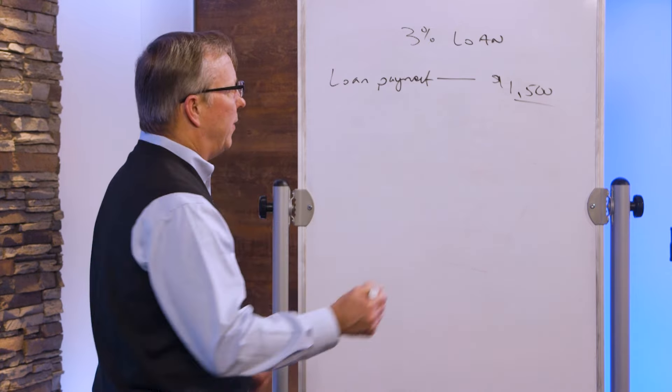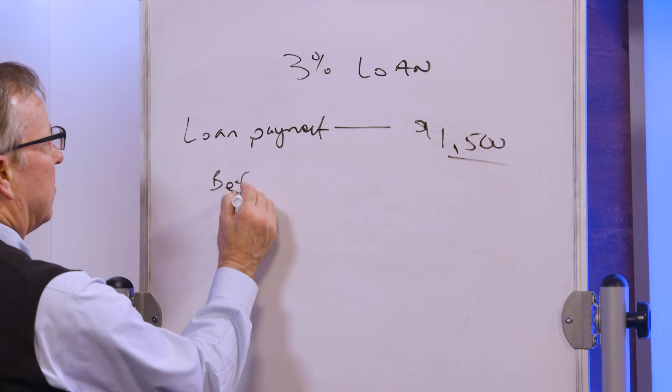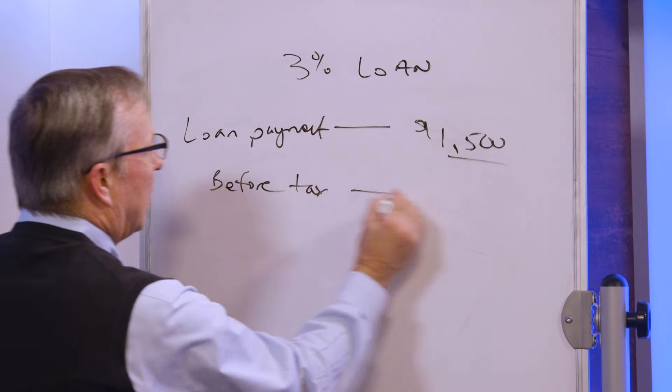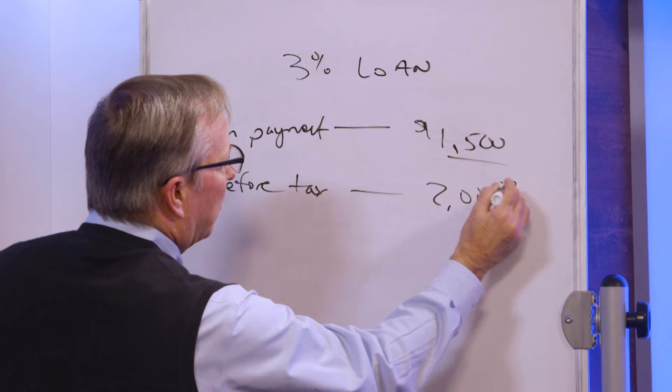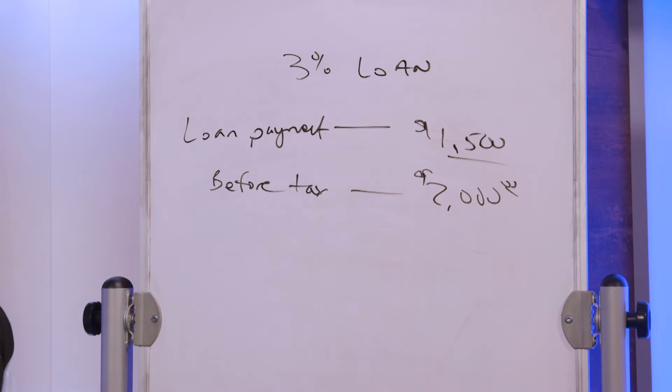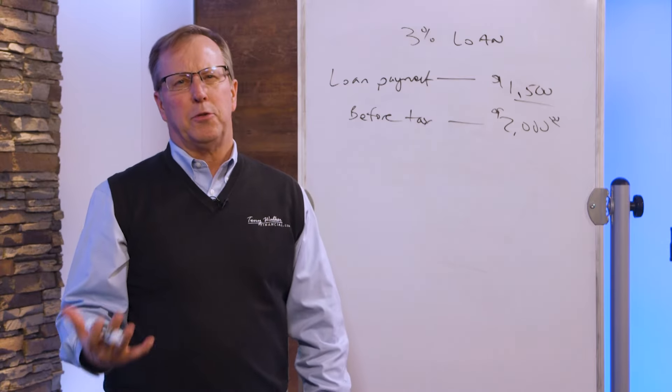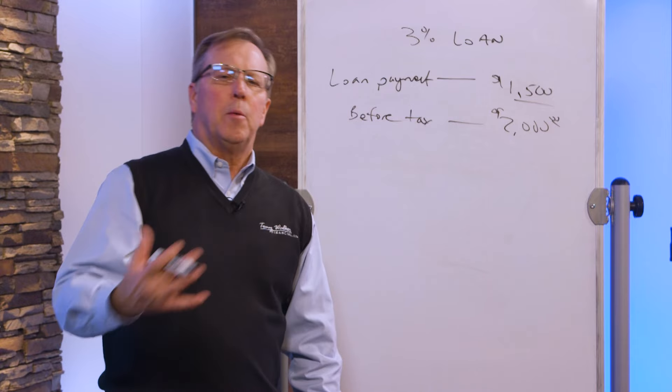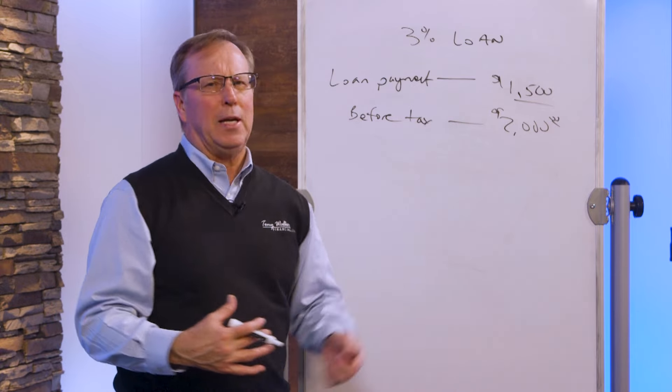Now that's money after tax. So that means before tax, we need to pull out, let's say the only place we can get it is their tax-infested IRA. We got to pull out $2,000 a month, pay the taxes on it to net $1,500.